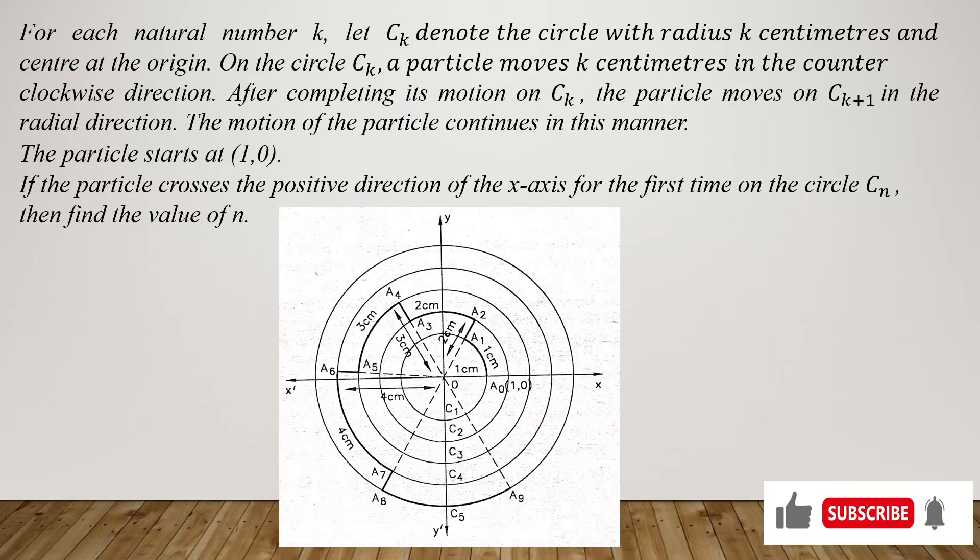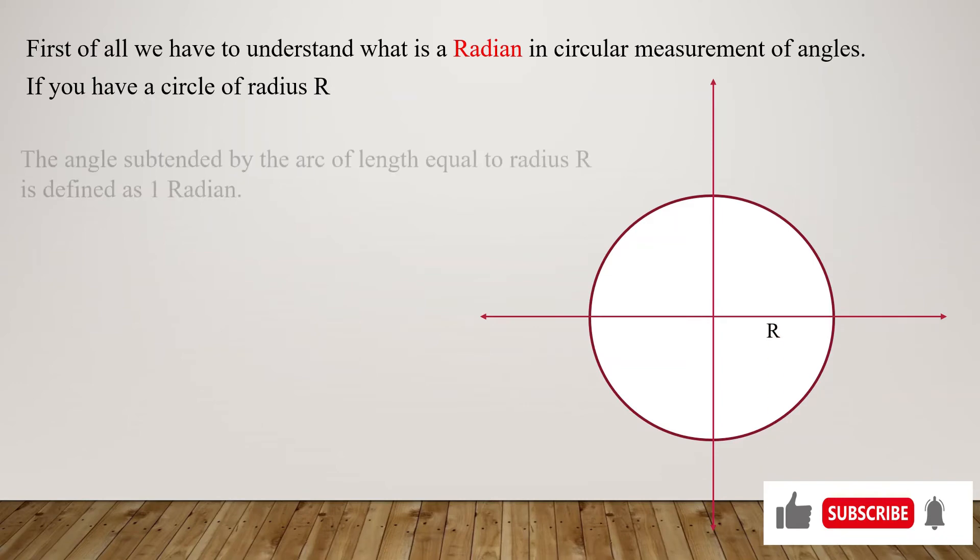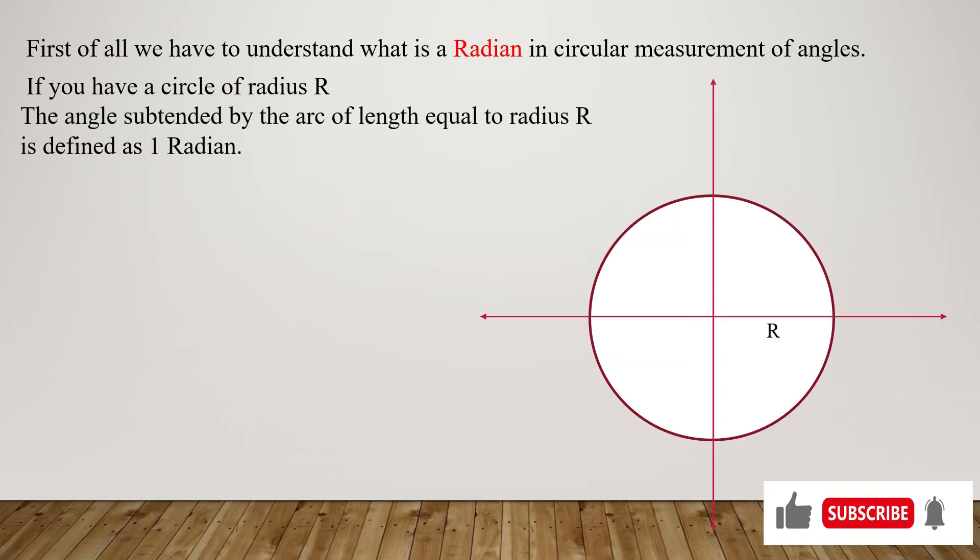Let us understand first what is a radian. If you have a circle of radius R, the angle subtended by the arc of length equal to radius is defined as one radian. So we have an arc length equal to the length of radius, and the angle subtended by the arc is one radian.